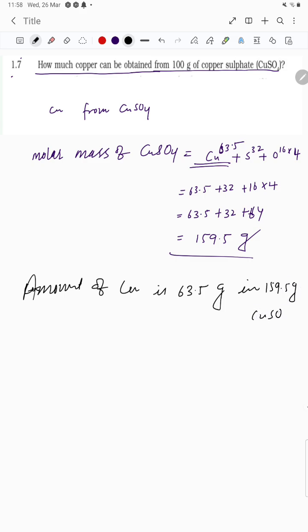Therefore, 159.5 grams CuSO₄ contains 63.5 grams copper. So 1 gram CuSO₄ contains how much?